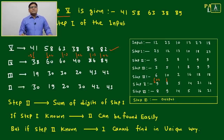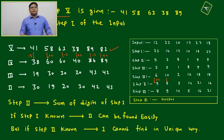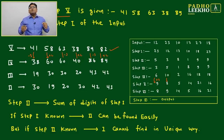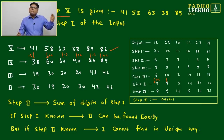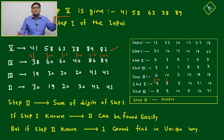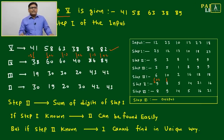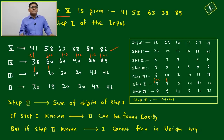Going from Step 4 back to Step 3: Step 3 will be half of Step 4, since going forward Step 4 doubles Step 3. For example, 38 becomes 19.